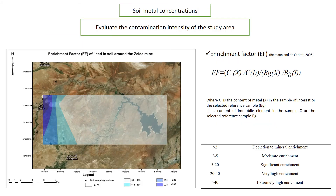The enrichment factor was initially developed to speculate on the origin of elements in the atmosphere and precipitation, but progressively it has been used in soil and sediment studies. It can be calculated by the following equation, as you can see, and it is characterized by five classes. The metallic enrichment is accentuated in the tailings and the surrounding soils, while downstream this enrichment decreases. All sample values in the study area are higher than the limit value of this factor.